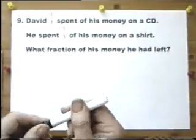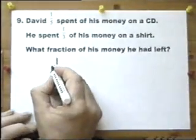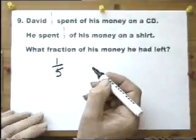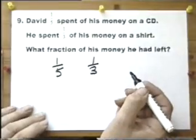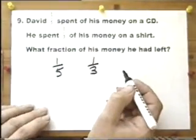David spends a fifth of his money on a CD and he spends a third of his money on a shirt. What fraction of his money does he have left?